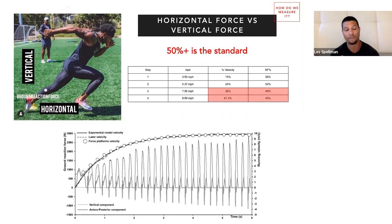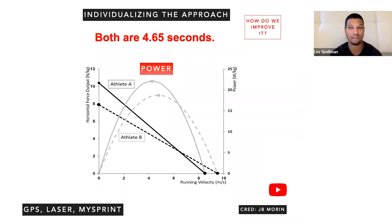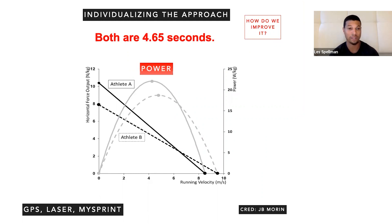Essentially what this is saying is that when we're looking at an athlete accelerating to top speed, we're looking at a horizontal component. We still want to know that horizontal component even as the velocity increases, so their acceleration rate adds to the velocity. Looking at an athlete and understanding this is the truth — how do we individualize the approach? Because obviously every athlete is going to have a little bit of a different signature. This is where force-velocity profiling comes in.